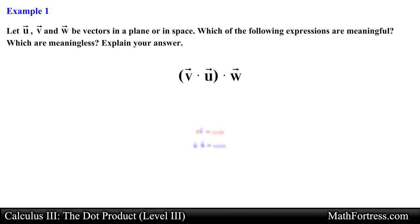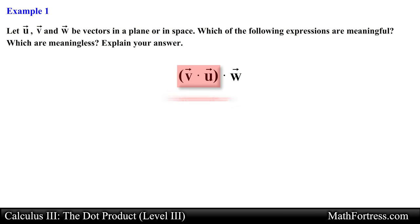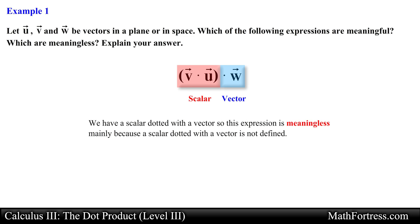Let's take a look at the first expression: the quantity (v dot u) dotted with w. Breaking this into pieces, v dot u produces a scalar, which will then be dotted with vector w. Since the dot product is defined only for vectors, having a scalar dotted with a vector means this expression is meaningless.